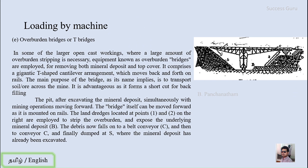The last topic is the overburden bridge or T-bridge. In large open cast workings where a large amount of overburden stripping is necessary, equipment known as overburden bridges is employed for removing both the mineral deposit and the top cover simultaneously. In this generalized sketch of the overburden bridge, B is the ore body. The ore body as well as the overburden are removed simultaneously and dumped on the other side of the mine where excavation has already been completed.